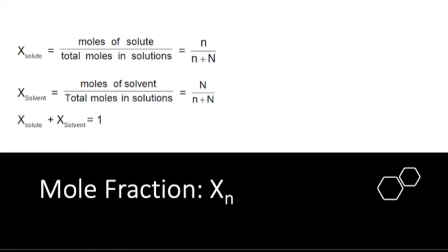Let's look at mole fraction, represented by X sub n. We need to find the total moles in solution. Since a solution has two components — solute and solvent — the mole fraction of solute plus the mole fraction of solvent should always add up to 1. Small letter n represents the solute, capital letter N represents the solvent, and the sum n + N is the total moles in solution.